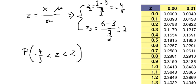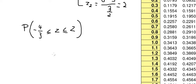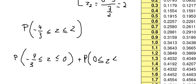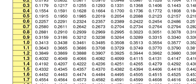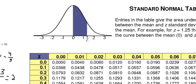In this situation, we can divide this one. The probability from negative 4 over 3 to 0 plus the probability from 0 to number 2. We can use this table here.